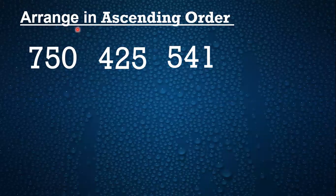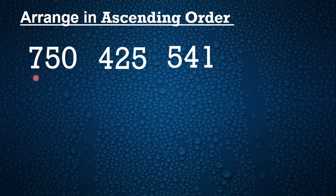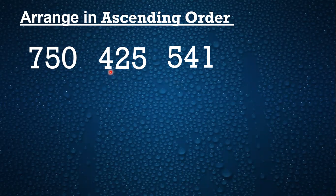Here it says arrange in ascending order. So here we have three-digit numbers: 750, 425, and 541. We need to arrange these numbers from small to big. So how do we know which number is small and which number is big?